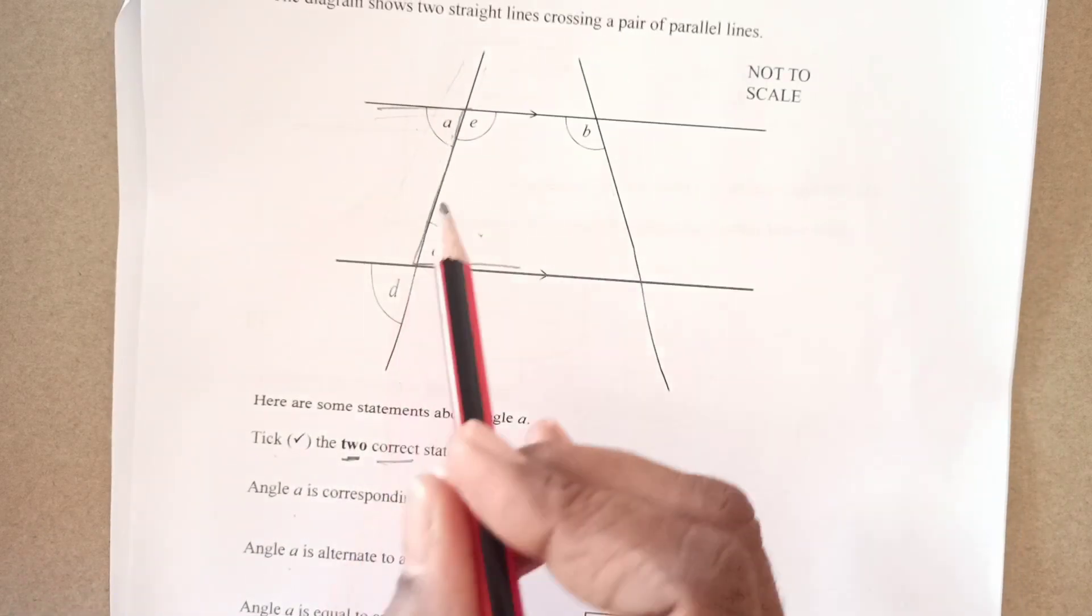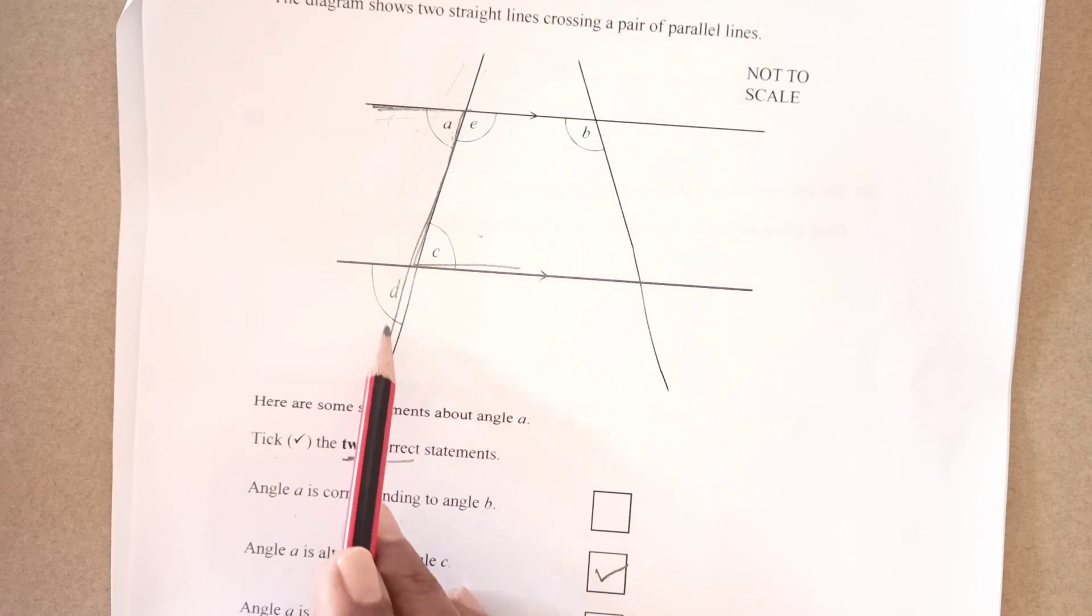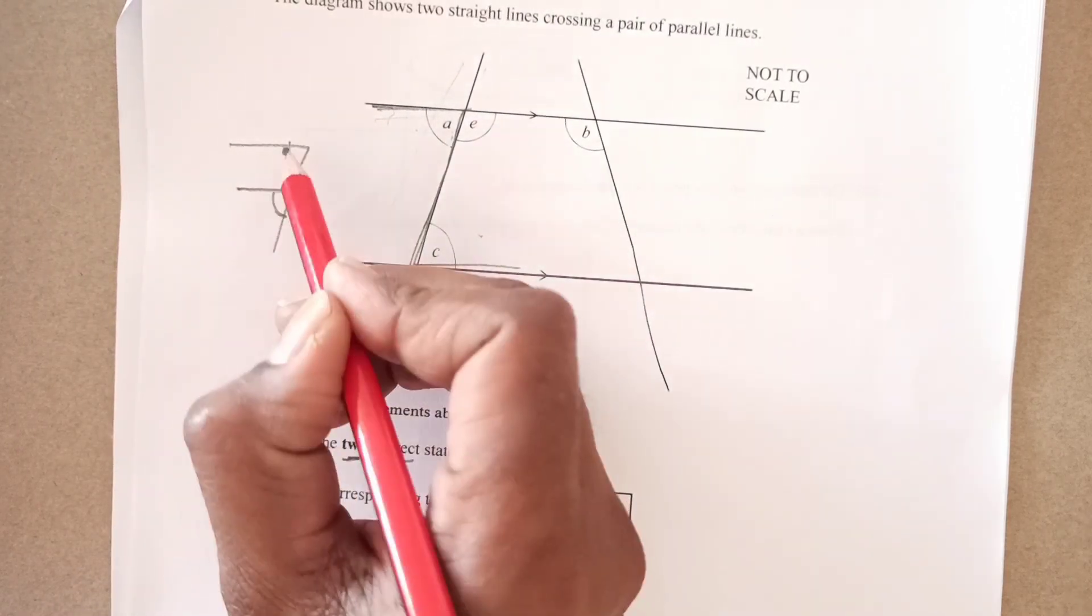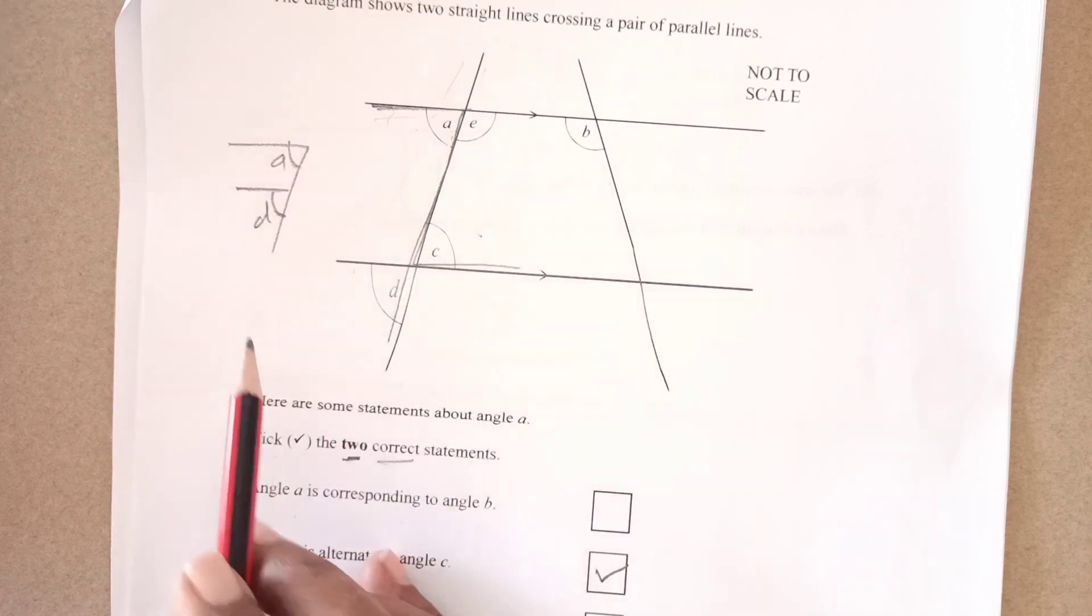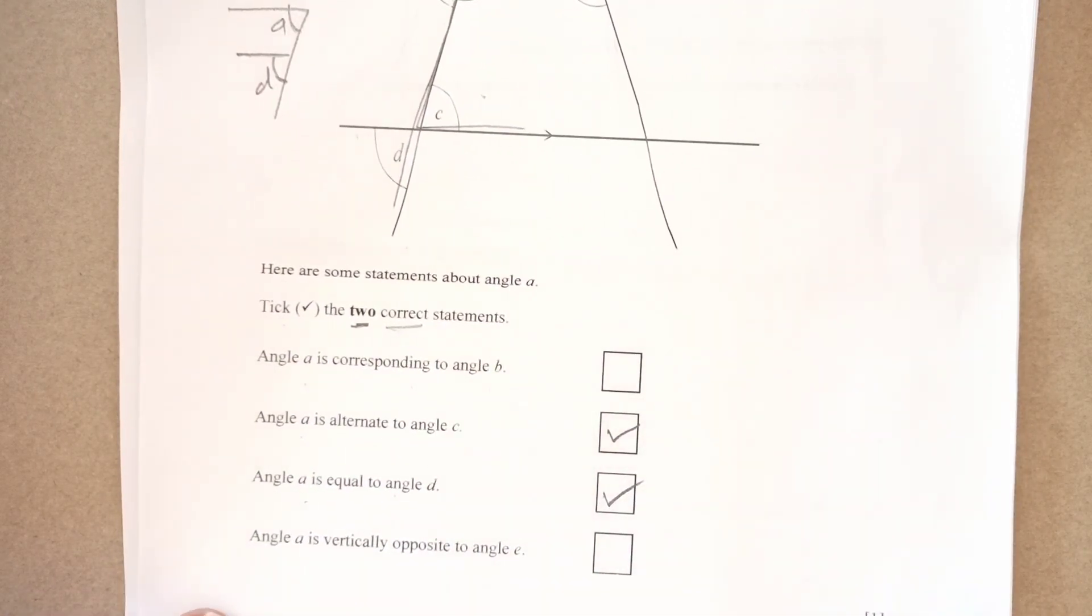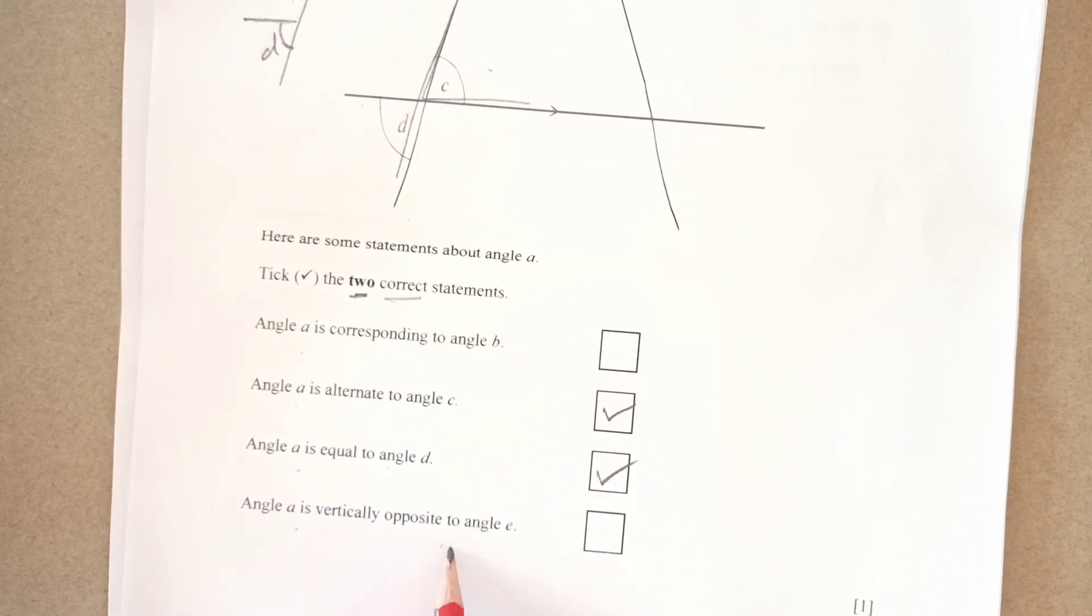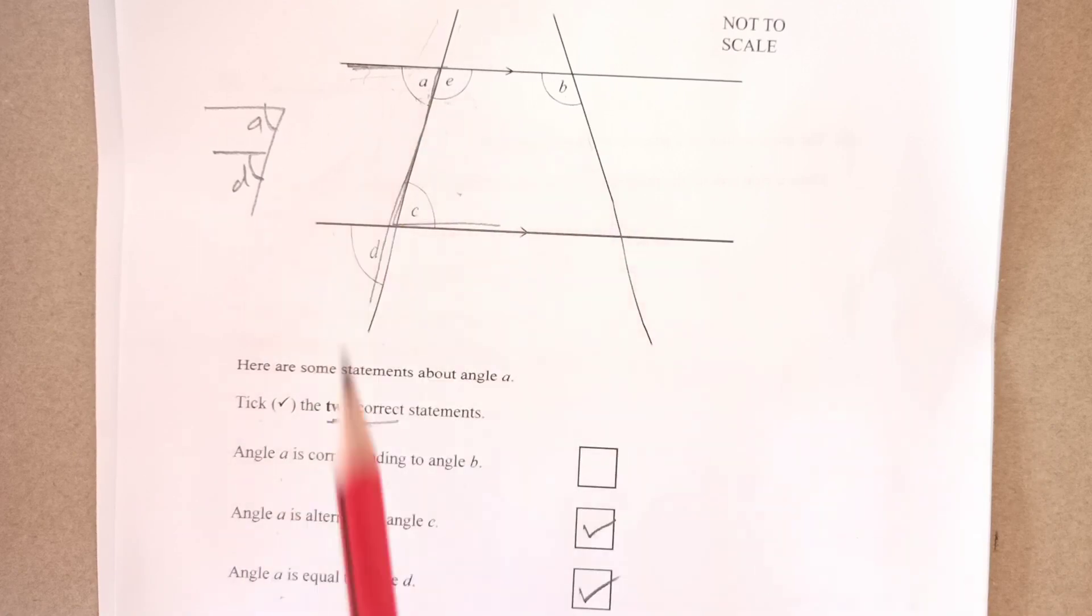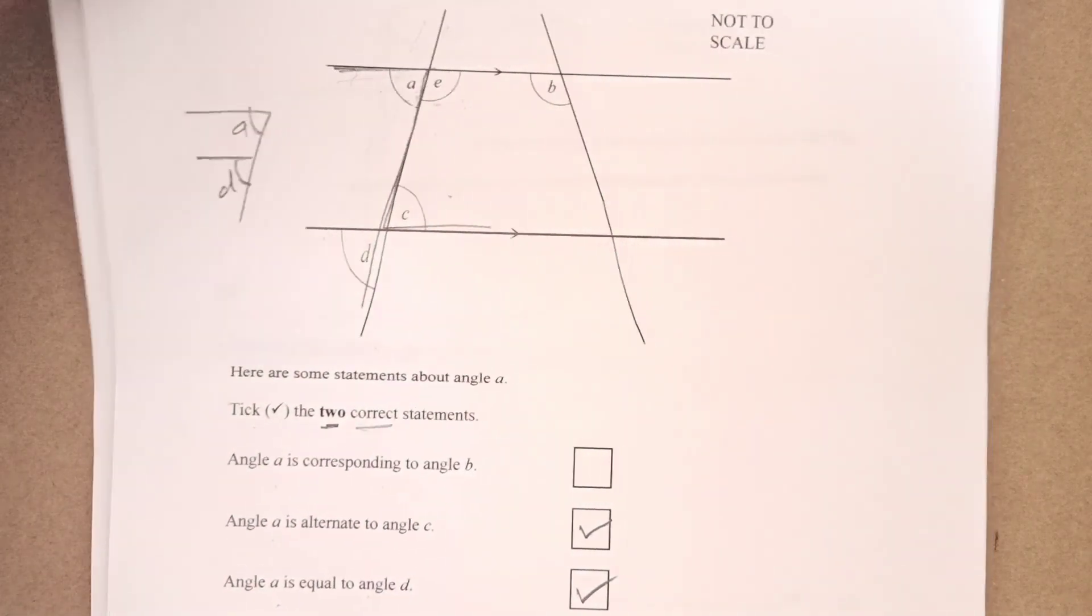Second A is alternate to angle C. This one here if you see one is on this side another one here on the parallel line. Yes this is correct. Angle A is equal to angle D. Yes because we see where there is a F shape here. If we have F shape the angles are like this. This is angle A and this is angle D. So they are corresponding to each other. They will be equal right. Angle A is vertical opposite to angle E. Angle E they are adjacent. They are not vertically opposite. So that is not the option.